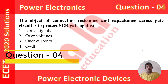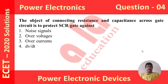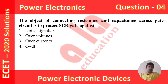Coming to question number 4. The object of connecting resistance and capacitance across the gate circuit is to protect the SCR gate. In triggering the SCR, we make use of a gate triggering circuit. Resistance and capacitance connected across the gate circuit is to protect the SCR from noise signals. So the correct answer is noise signals, and option 1 is the correct option.